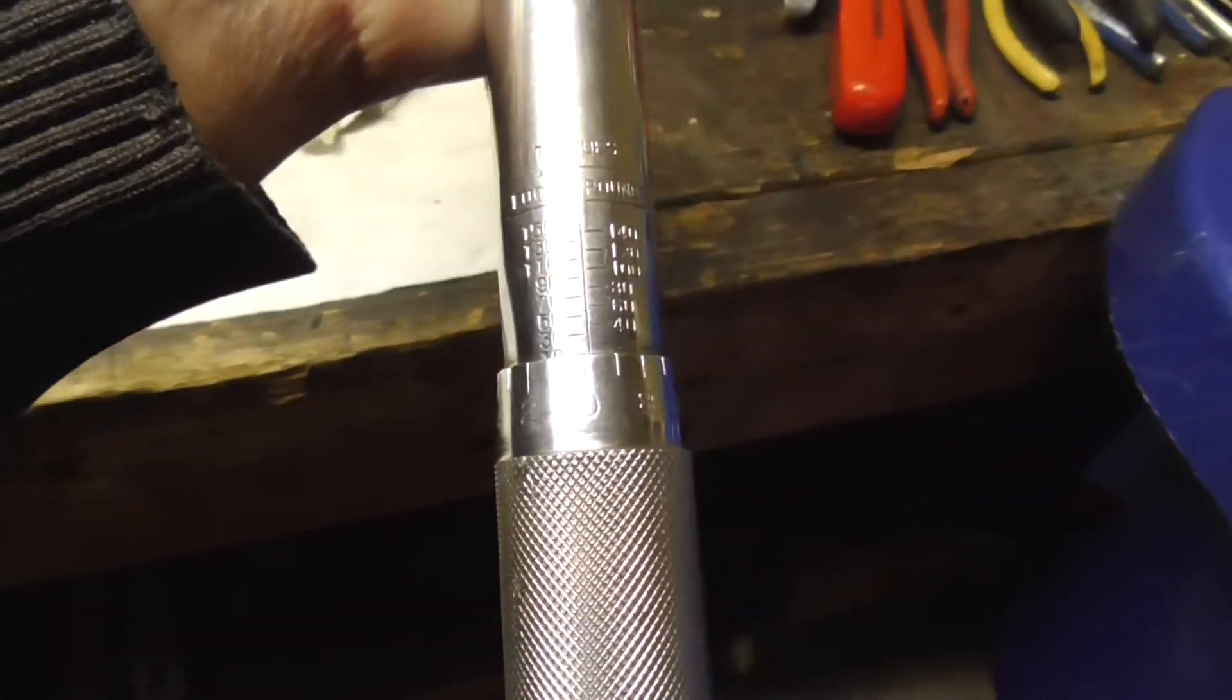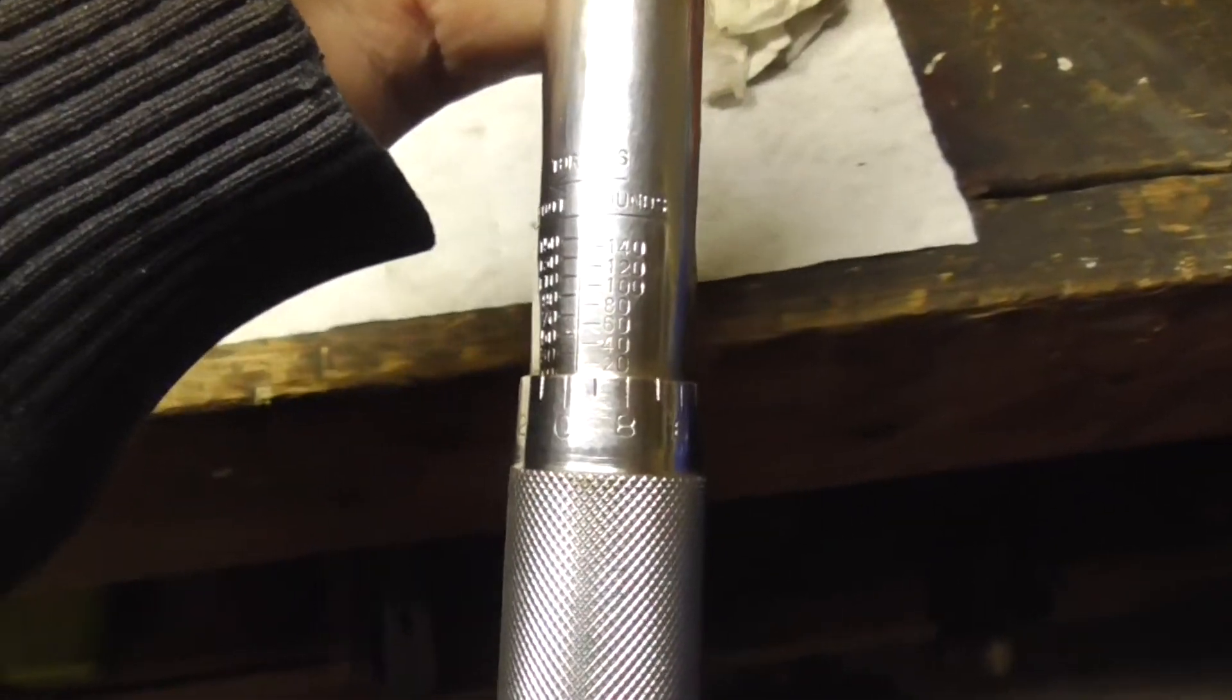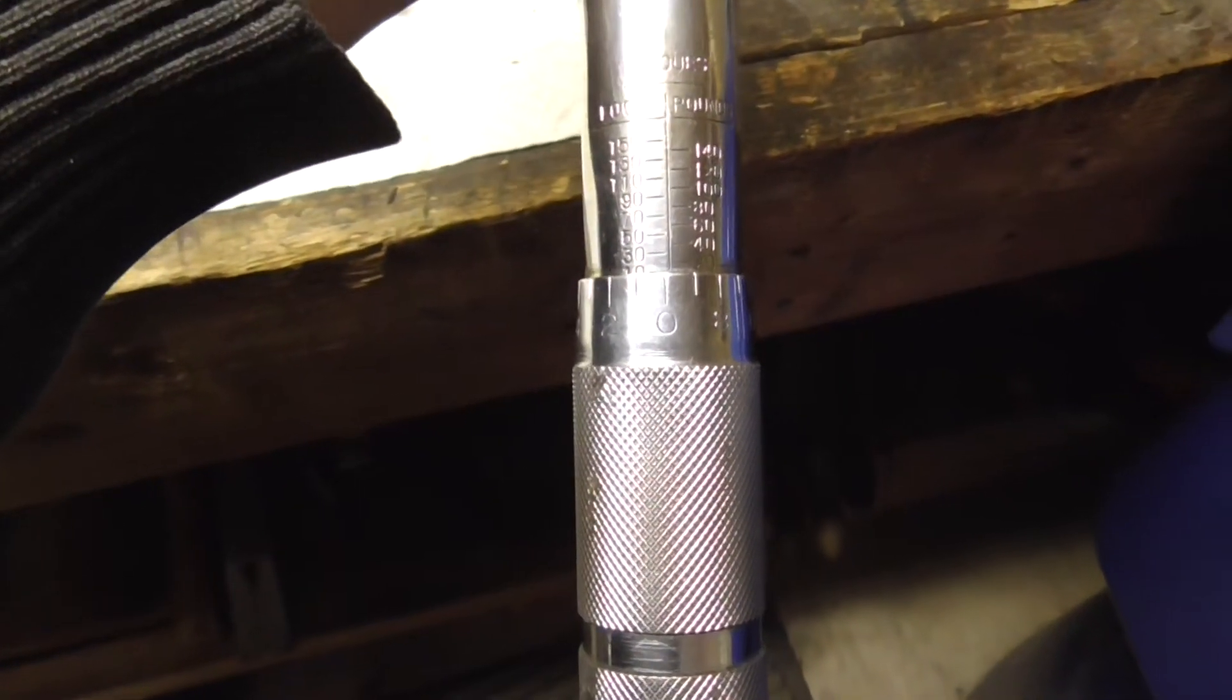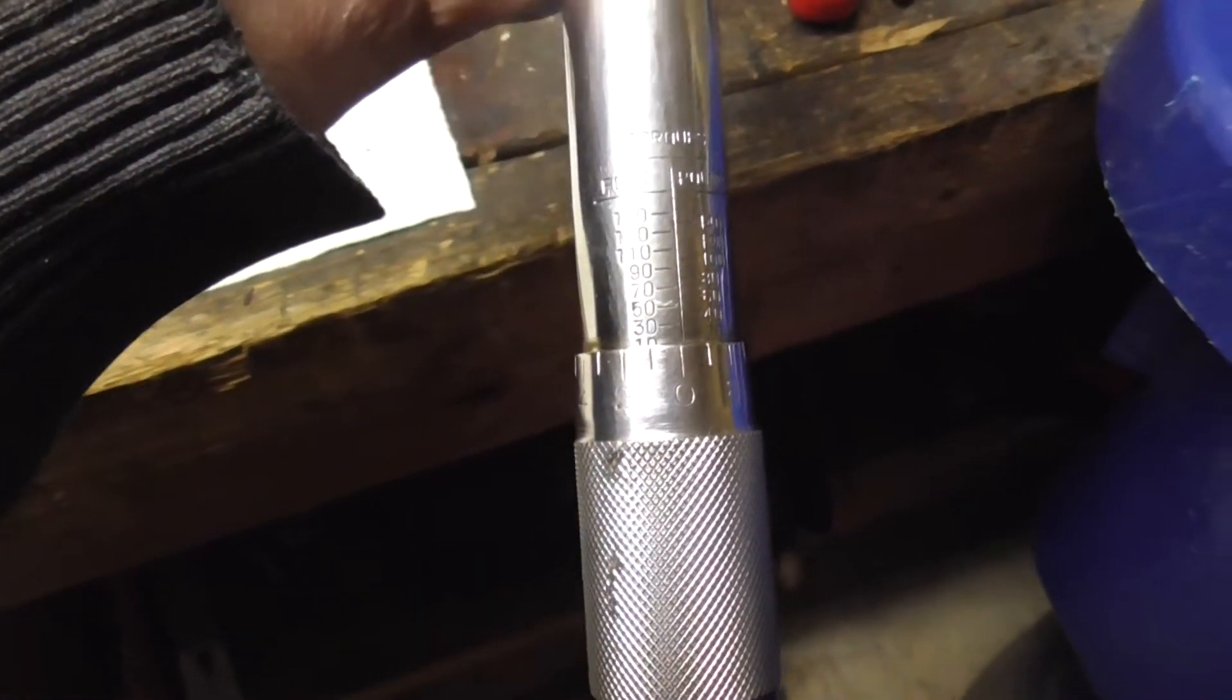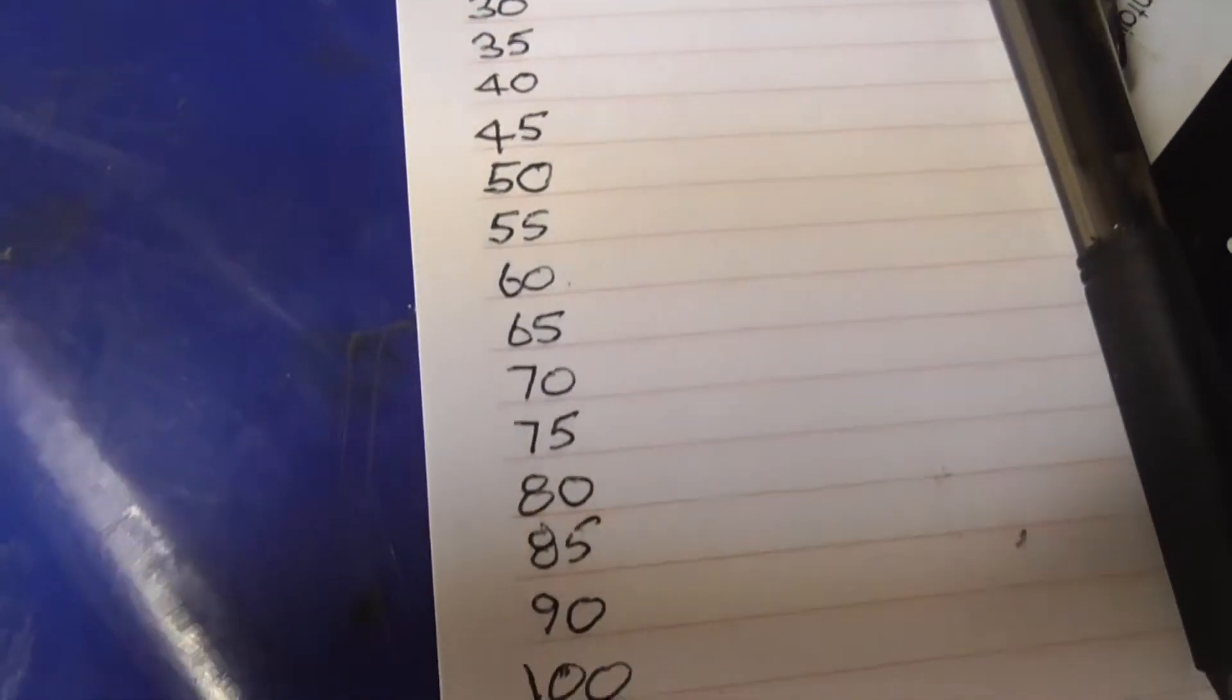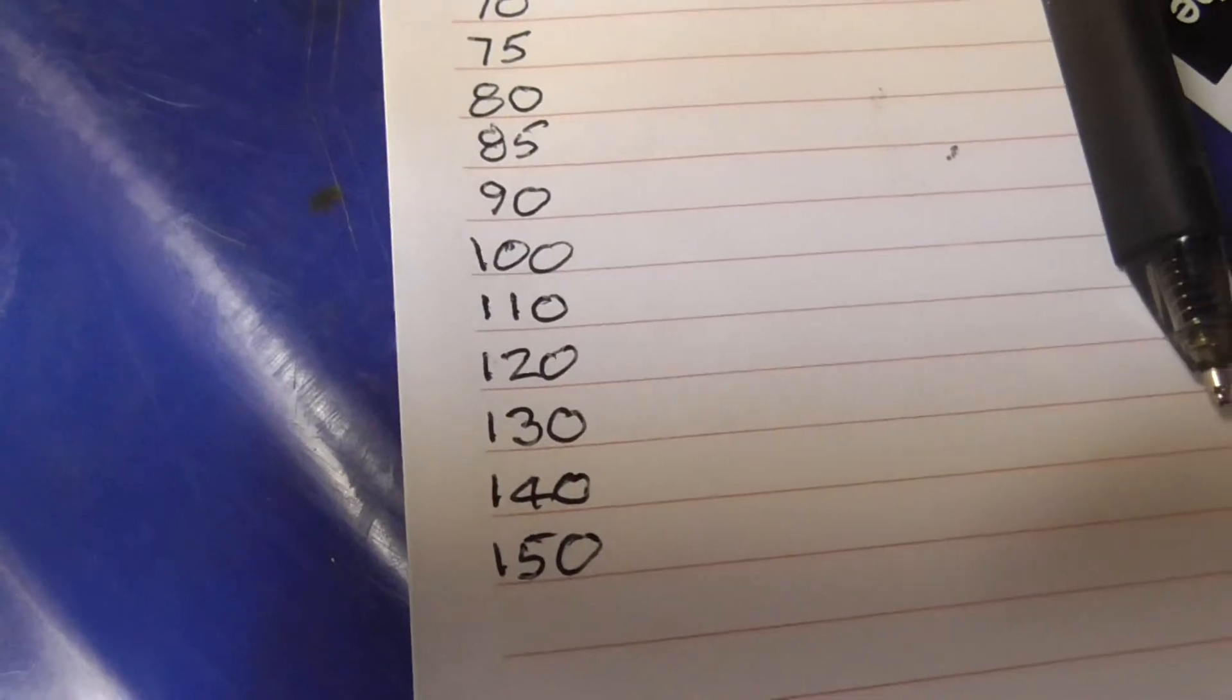So this particular torque wrench, which has no name on it that I can find, runs from about 10 foot-pounds up to an alleged 150. Starting at 10, I'm going to do every 5 foot-pounds up to 100, and then every 10 thereafter.